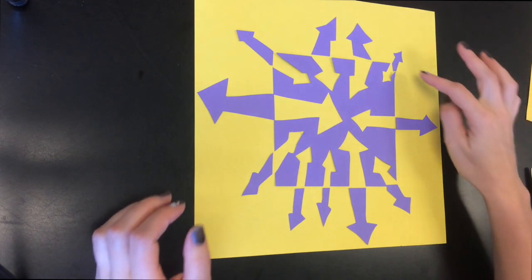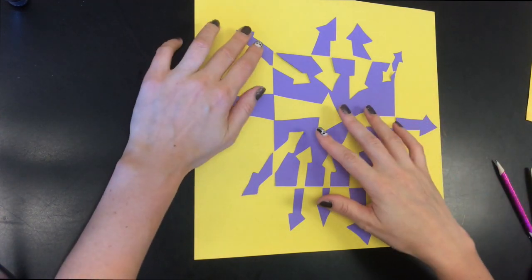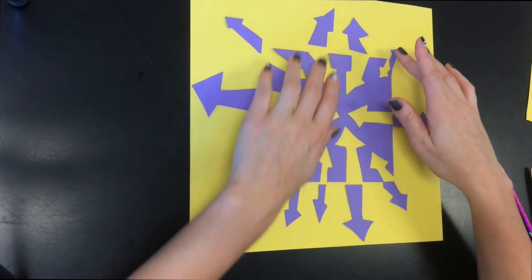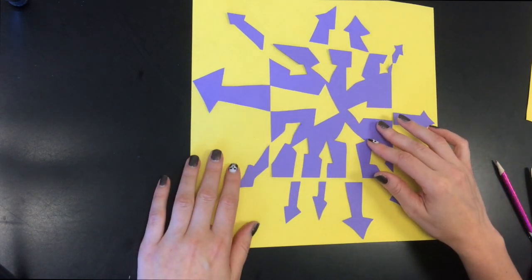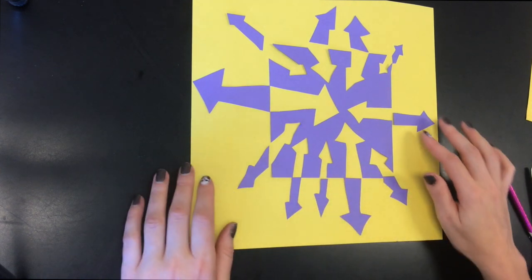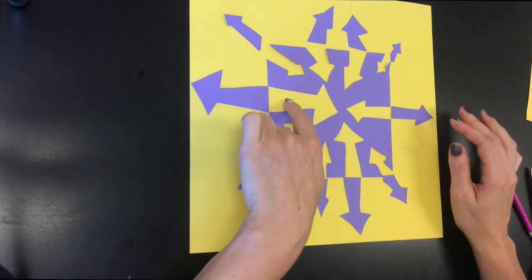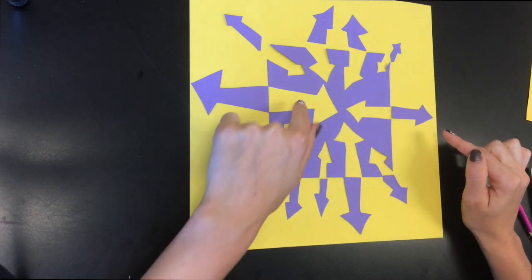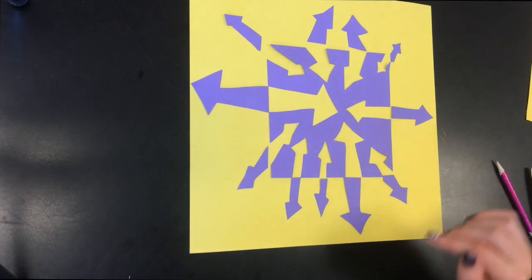Now I have all my pieces figured out where they're going to go. I think I'm going to shift this up a little bit so it's a good thing I didn't glue it down. And then I'm going to glue it all down. And you can really see the negative and positive space now. Negative, empty, positive, filled. So my violet would be the positive space and my yellow is the empty space.